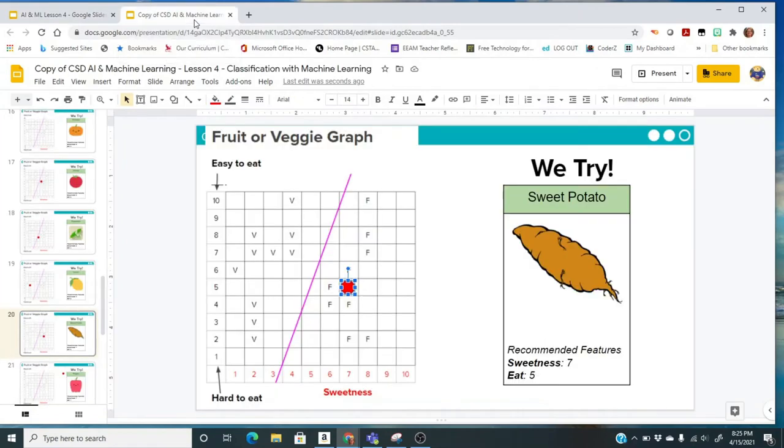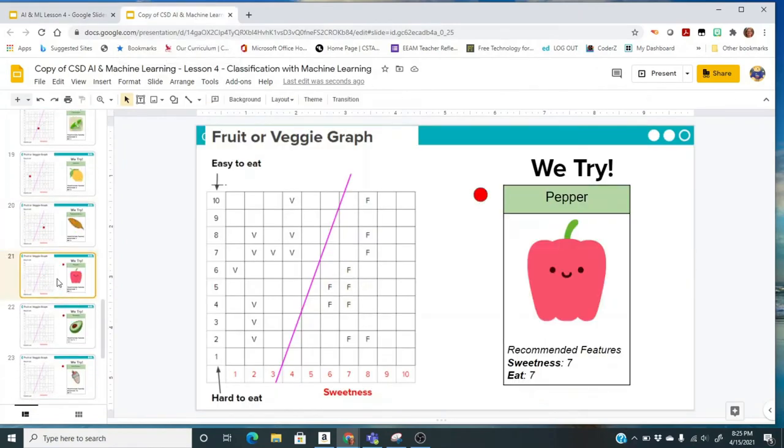We have four more to try. The next one is pepper. Peppers can be sweet, so we've got a 7 and a 7, but you can use a different number if you'd like. It's going to classify a pepper as a fruit. So is a pepper a fruit? According to the definition of a fruit, a pepper is a fruit because it has seeds in the middle.